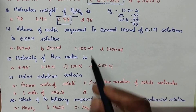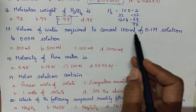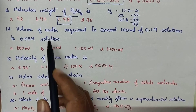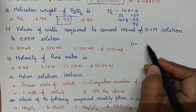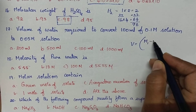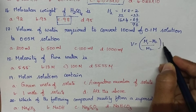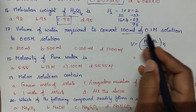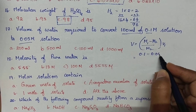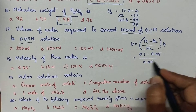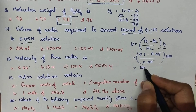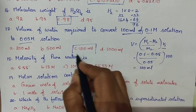Volume of water required to convert 100 mL of 0.1 M solution to 0.05 M solution: volume of water to be added = (M1 − M2) / M2 × V1. Here M1 = 0.1, M2 = 0.05, V1 = 100 mL. So volume = (0.1 − 0.05) / 0.05 × 100 = 100 mL. Option C is the right answer.